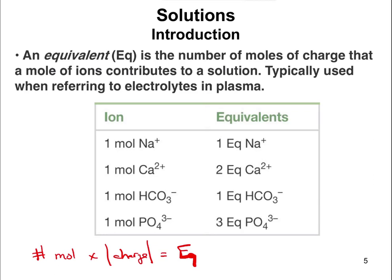For example, if you have one mole of sodium ion, you would have one equivalent. If you have one mole of a calcium ion, you would have two equivalents — because you take one mole times the charge of two, giving two equivalents. For phosphate, one mole times a charge of three (taking the absolute value of negative three) gives three equivalents. So the number of moles times the charge tells you how many equivalents of an ion you have.